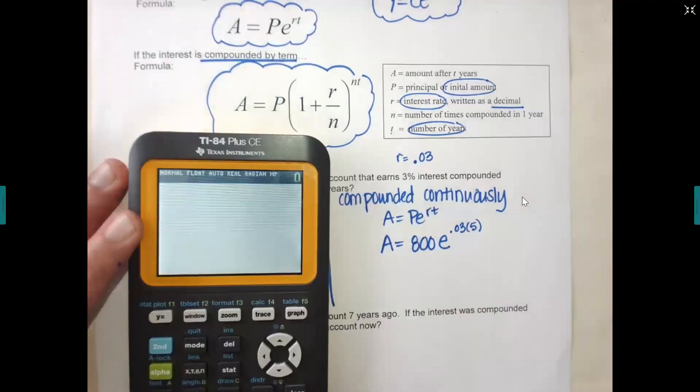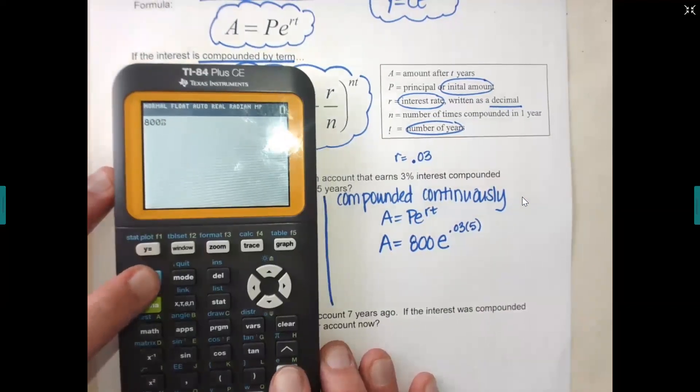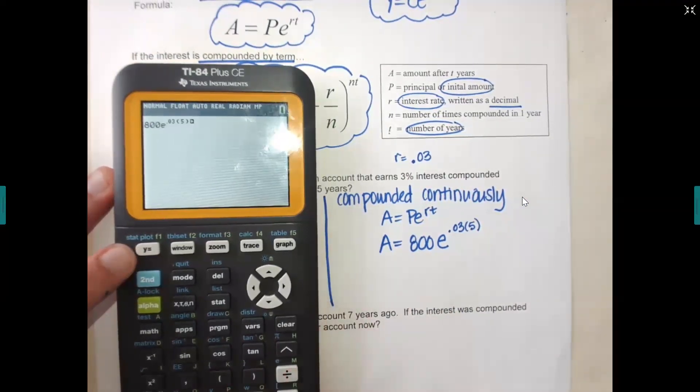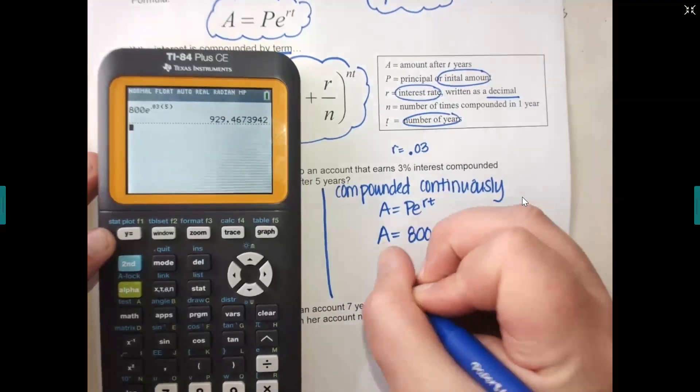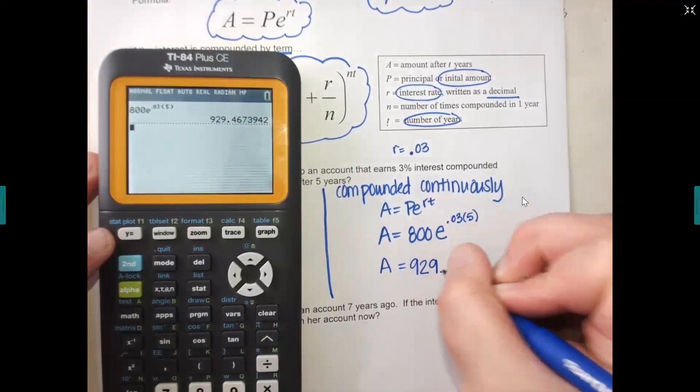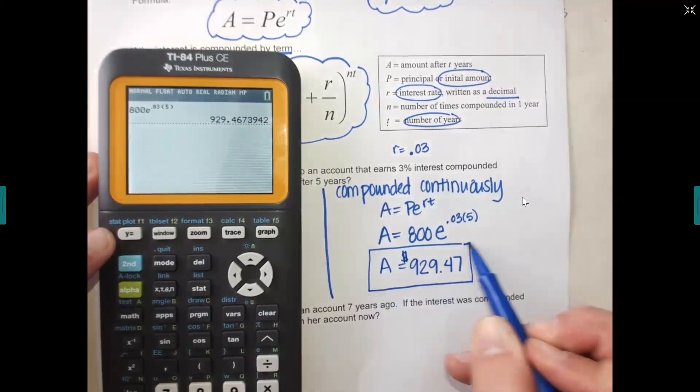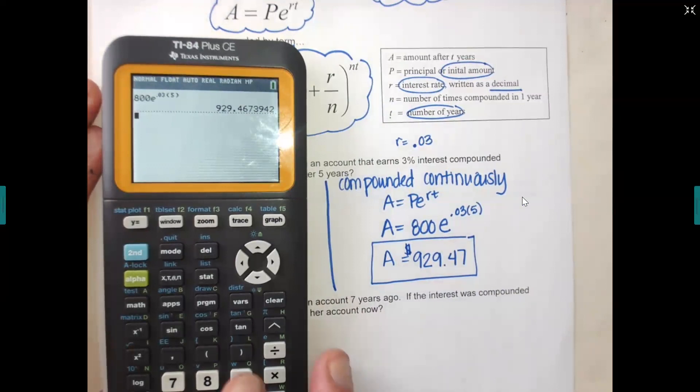And then from there, just like last time, you would put it into the calculator, see what that new value is. So you do that now, please. 800. Where's the E? The division sign. So second divide. Then I'm going to go up to the 0.03 times five. So my $800 would grow to $929.47. Now, because this is money, I'm just going to do two decimals every time. But sometimes on your practice, it'll say to the nearest dollar or whatever. Do we remember how to do that from last class?